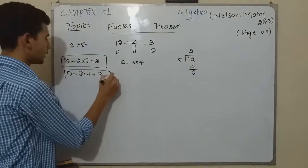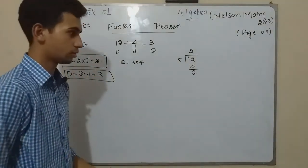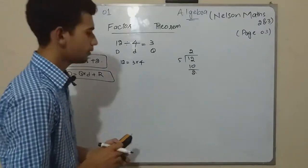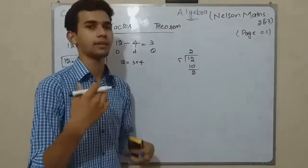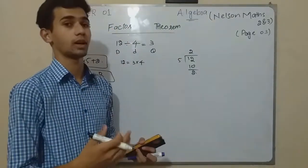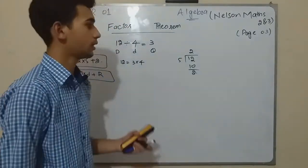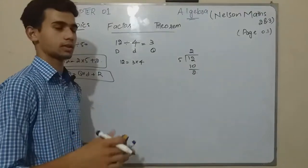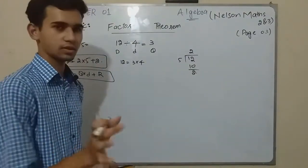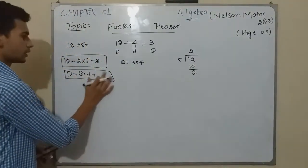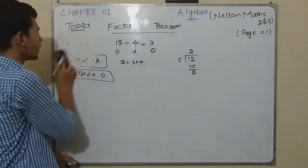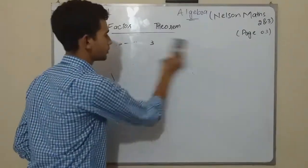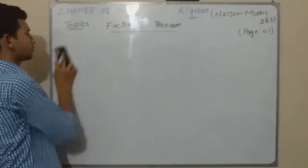This is the dividend, 5 is the divisor, 2 is the quotient plus remainder. This was all Remainder Theorem. But if the dividend is going to divide by such a divisor where there is no remainder, it means if the remainder is 0, that's Factor Theorem.